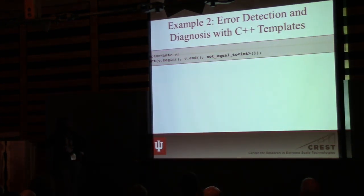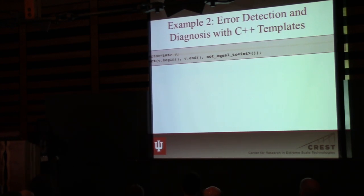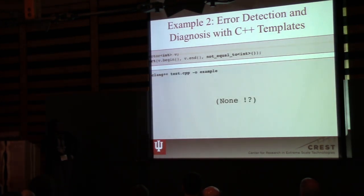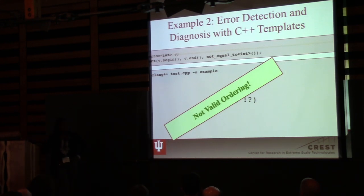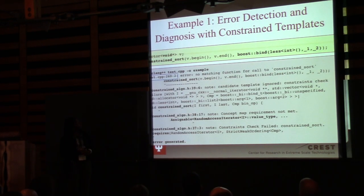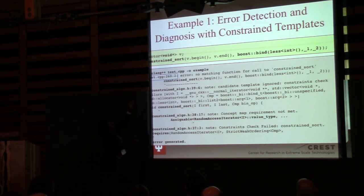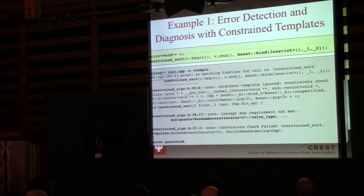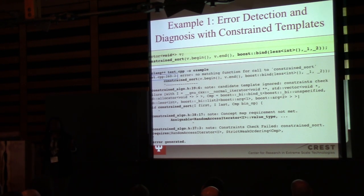Depending on how deeply nested that call is, you can actually get error messages as large as 500 megabytes or even 2 gigabytes. All we want the compiler to tell us is that the binary operator is not compatible for sorting elements of that type. Here's another problem: we now have a vector of integers, and we're trying to sort them, and we pass an operator that adds on integers but it's a not-equal-to operator. Does it make sense to sort things with not-equal-to? The compiler thinks so, but STL tells us that should not be the case.